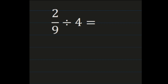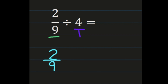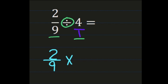For our final example, we have two-ninths divided by four. Our first step is to deal with our whole number — we have to turn four into a fraction by putting four over one. Then we look at our first number in the problem, two-ninths, which has to stay exactly as it is. Then our division sign — we're changing it into a multiplication sign. And we are multiplying by the reciprocal of our second fraction: the reciprocal of four over one is one-fourth. Denominator becomes the numerator and numerator becomes the denominator.